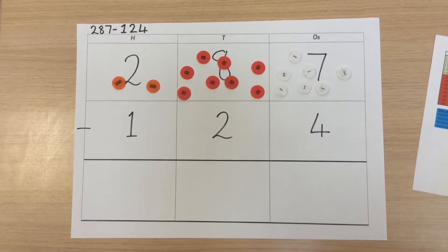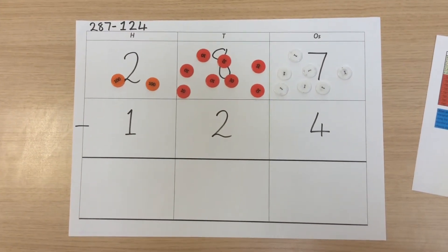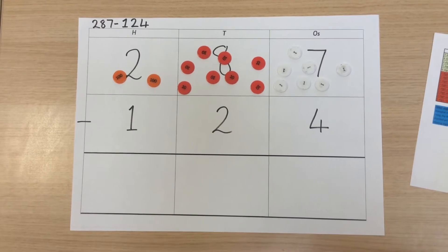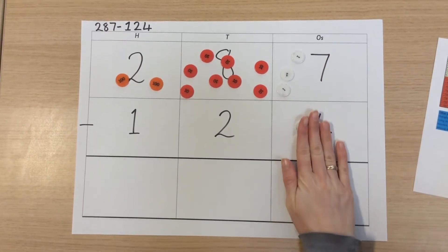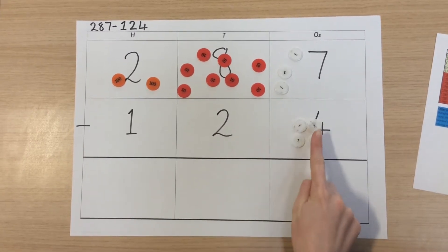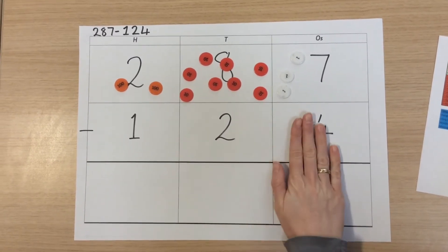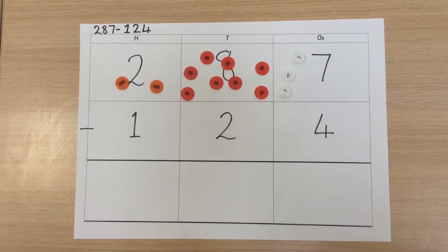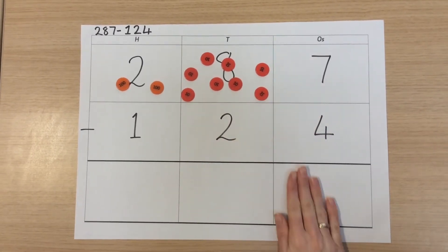We begin in the right hand side place value column, which is the smallest. Seven take away four. We begin by putting four counters into the middle box to check that it is the same number. If it is the same, we can subtract these away. We take what is left and bring these down to the answer box.